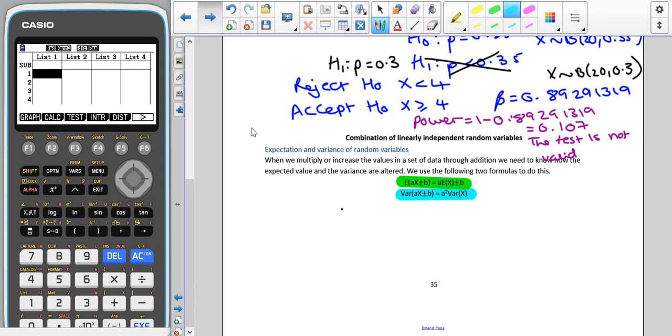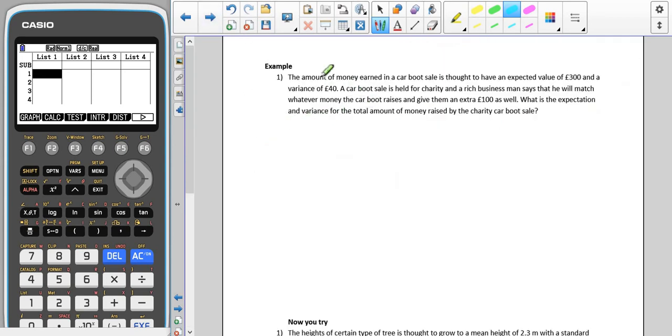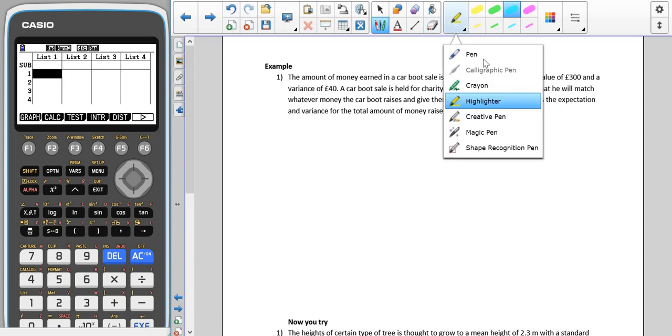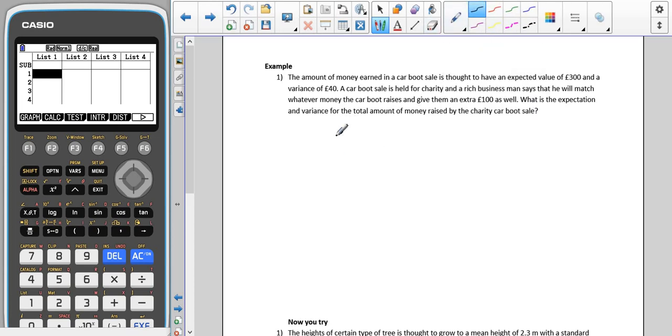So we're going to look at an example of this. The amount of money earned in a car boot sale is thought to have an expected value of 300 pounds and a variance of 40 pounds. So I'm going to call that E of X is 300 pounds and var of X is 40 pounds.